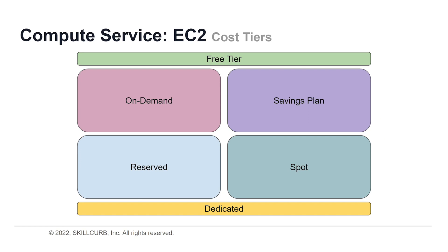There are several ways AWS will charge you for using EC2, unless you're on the free tier. The AWS free tier includes 750 hours of Linux and Windows T2 micro per month for one year. You can use this if it suits your workload, and it's also a great place to learn about EC2.